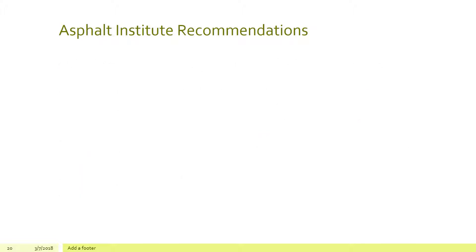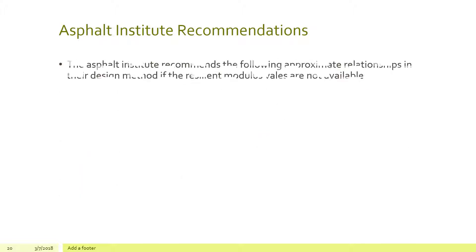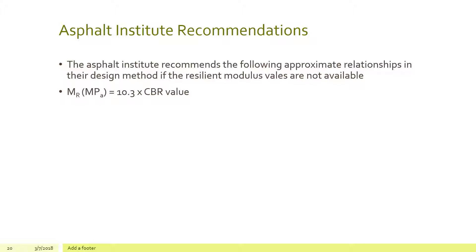The Asphalt Institute recommends the following approximate relationships when resilient modulus values are not available: M_r (MPa) = 10.3 × CBR, or M_r (MPa) = 0.8 + 3.8 × R-value.